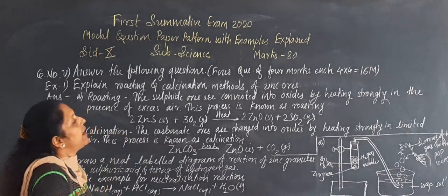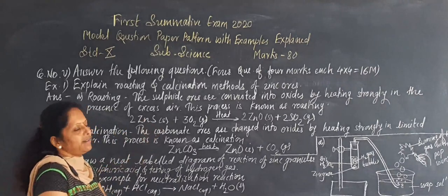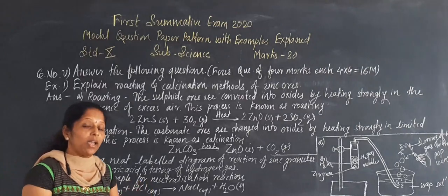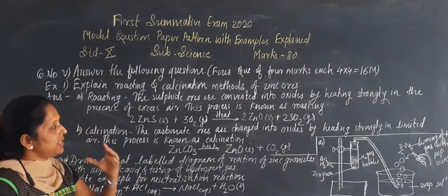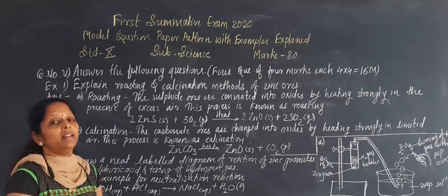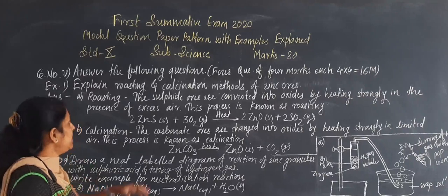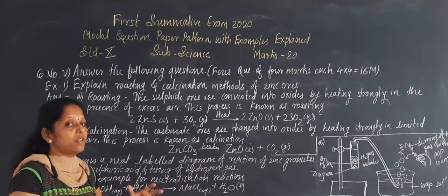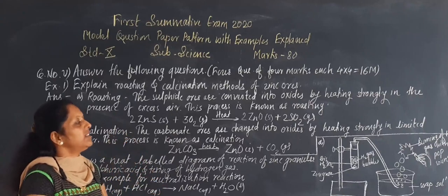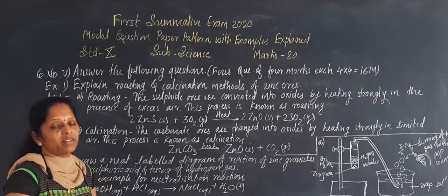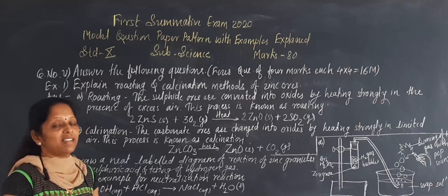The sulfide ores are converted into oxides by heating strongly in the presence of excess air. When excess air is present and we are heating strongly, then this process is known as the roasting method. This is the roasting method for the sulfide — heating strongly in the presence of excess air.